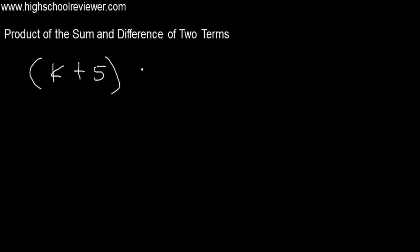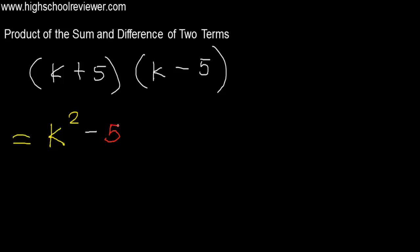Let's have another example. We have the quantity of k plus 5 multiplied by the quantity of k minus 5. It would still be the square of the first term minus the square of the second term. Our second term here is 5, so k squared minus 5 squared. Five raised to the power of 2 is equal to 25, so k squared minus 25 is our answer.